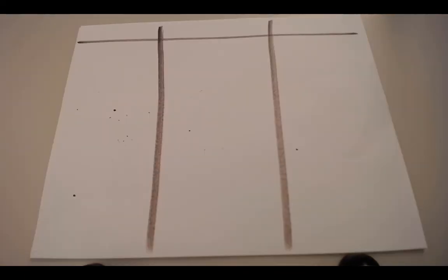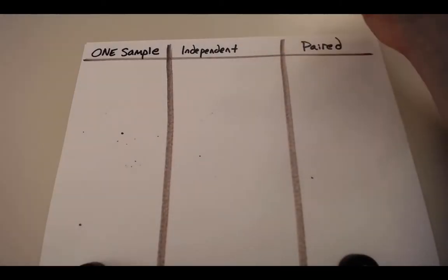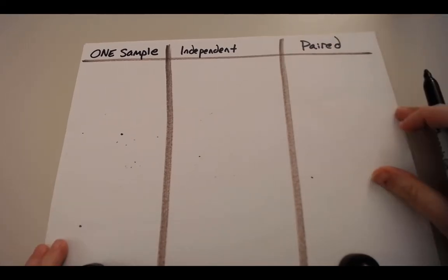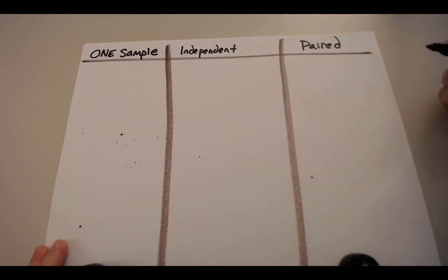When we think about t-tests, there are three types. There are one-sample t-test, independent-sample t-test, and paired-sample t-test. The neat part is that it's easy to tell the three apart.